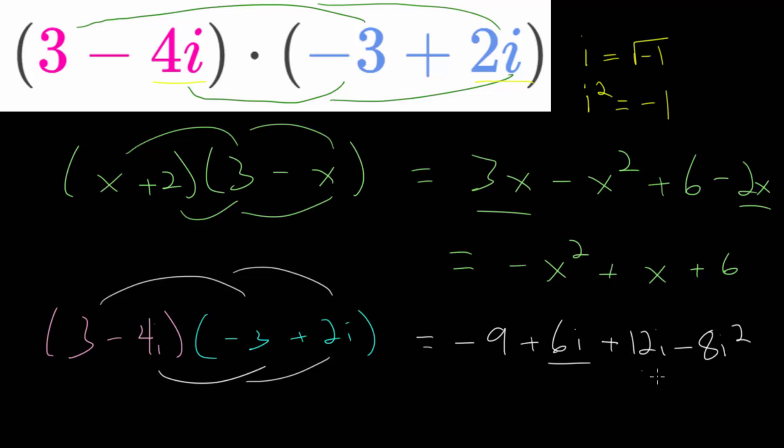So we can combine like terms here and we can substitute that i squared is really just negative 1. So we'll replace this right here with negative 1. So let's rewrite everything. This product here is equal to negative 9 plus 18i, and we have minus 8 multiplied by negative 1.